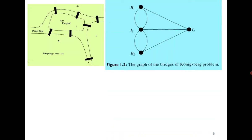To solve this problem, it was first modeled using graphs. The four positions were denoted as vertices — it doesn't matter the size of the positions, we just need a representation. If there is a bridge between any two positions, it is represented by a line, either straight or curved. This is how we draw a graph.